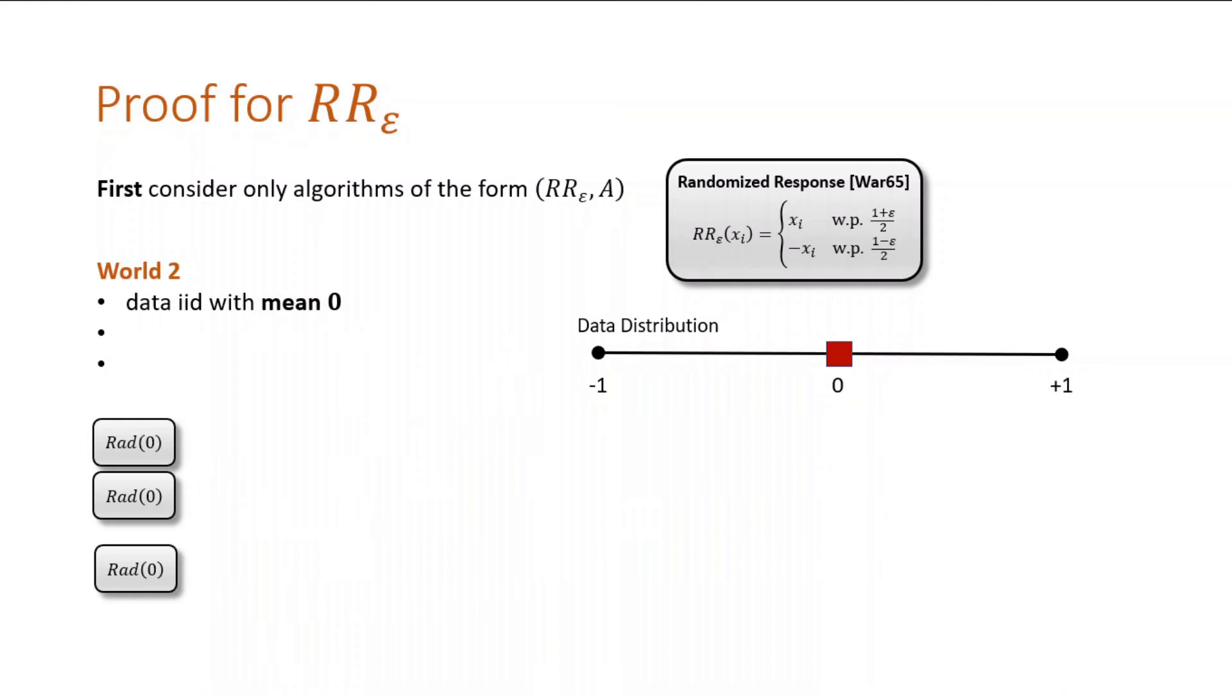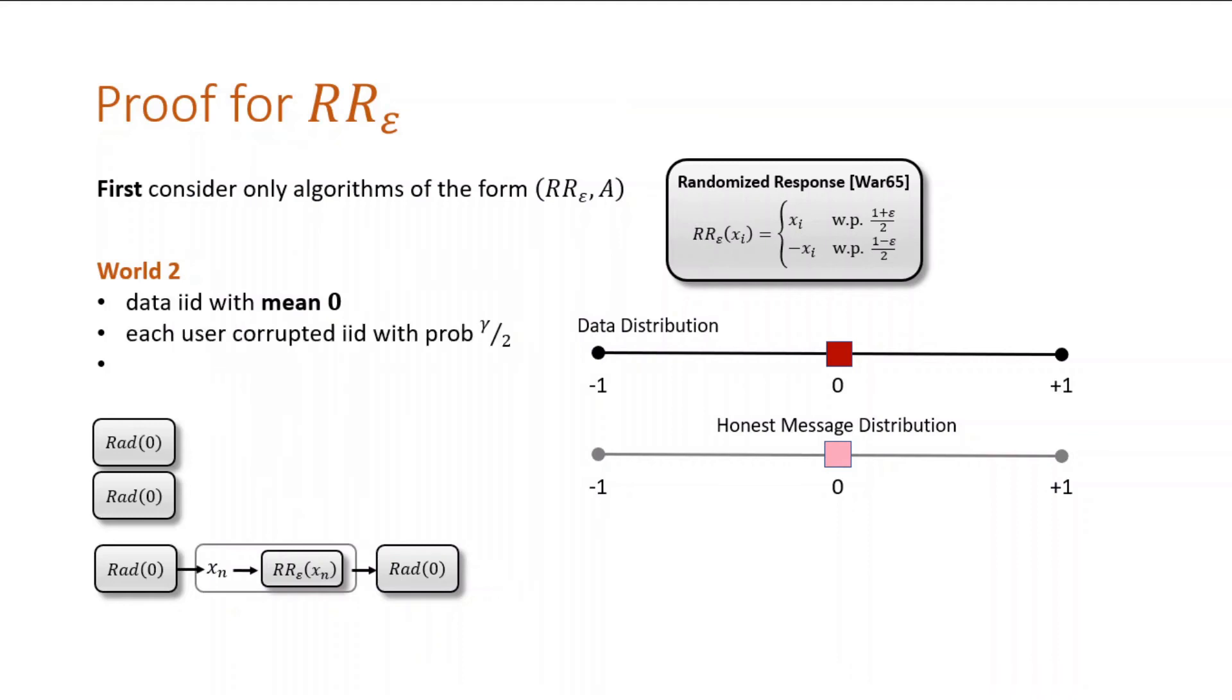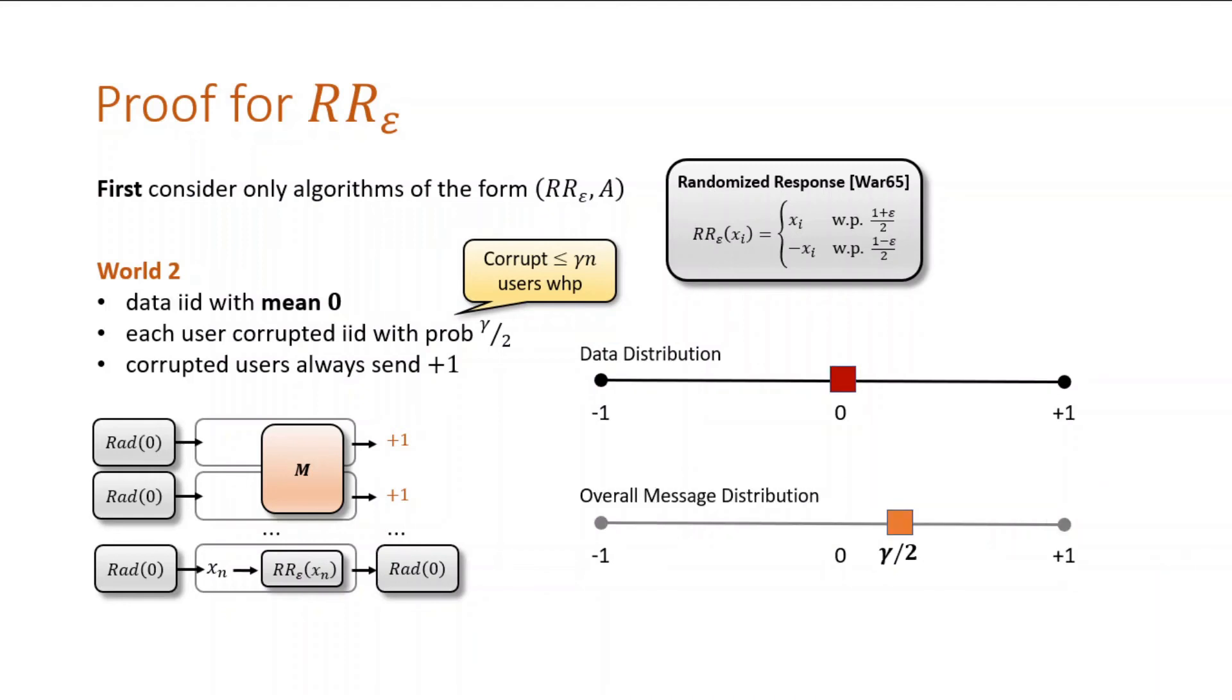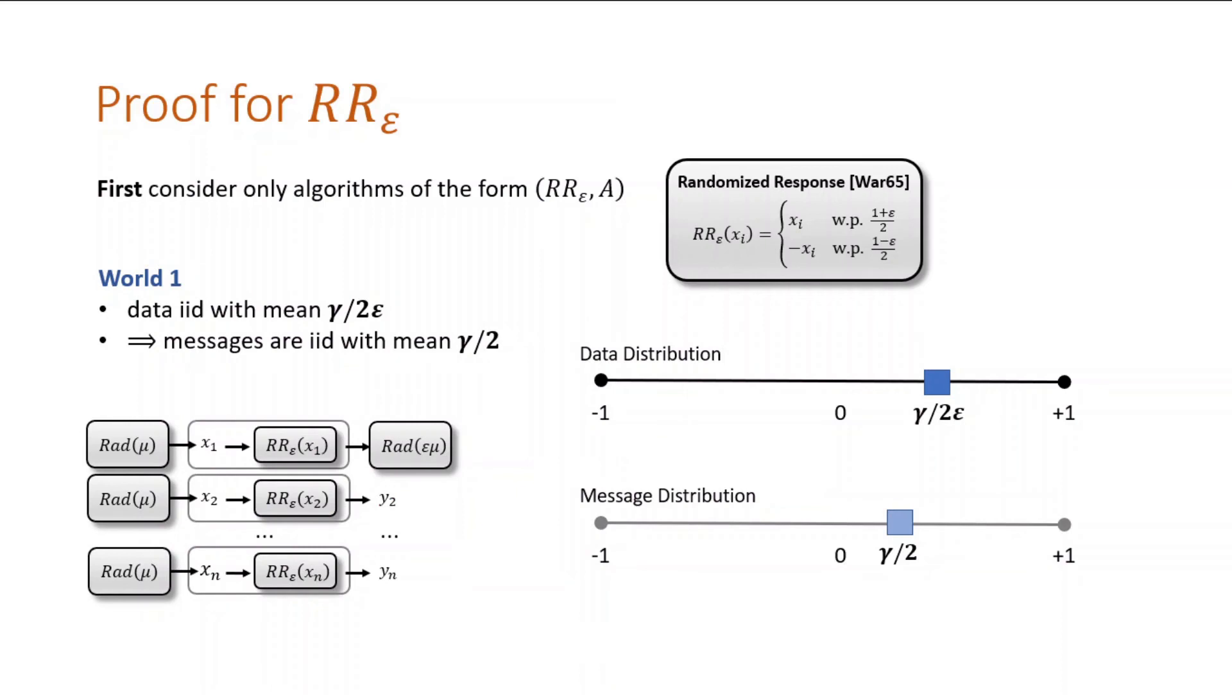Now let's consider world two, a corrupted execution. The mean here is zero, so honest users, like user n, will send messages with mean zero. Our adversary will corrupt each user independently with probability gamma over two. This has the effect of corrupting at most gamma fraction at very high probability. These corrupted users all execute m, and this m strategy is just output message plus one. The corrupt distribution has mean plus one as opposed to mean zero, but a corruption happens with probability gamma over two. So this means any message in world two has mean gamma over two.